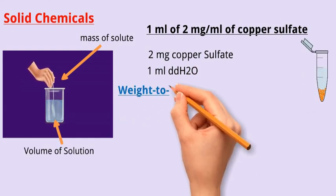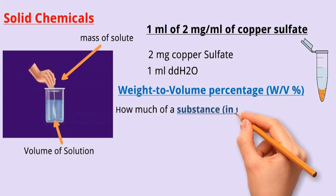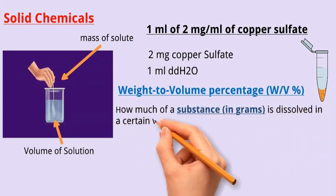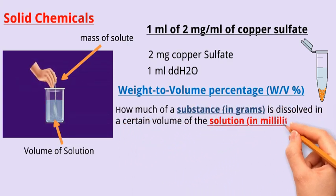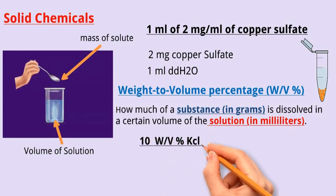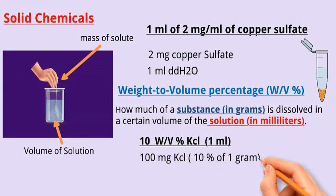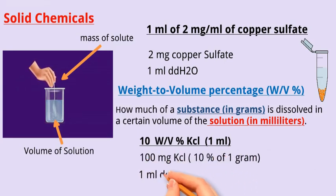Sometimes, we can express this by using weight to volume percentage. In this case, always remember that weight to volume percentage tells you how much of a substance in grams is dissolved in a certain volume of the solution in milliliters. For example, to prepare 10% of potassium chloride in 1 ml, we weigh 100 mg, the 10% of 1 g, and dissolve it in 1 ml of solution.